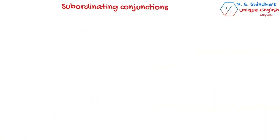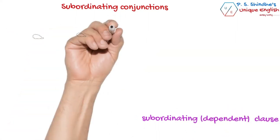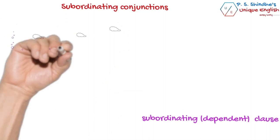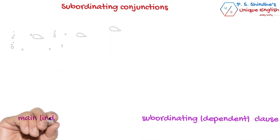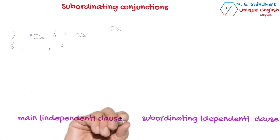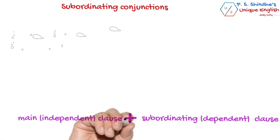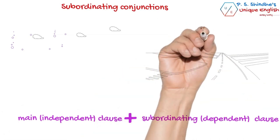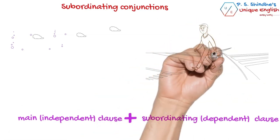Subordinating conjunctions introduce subordinating clauses. A subordinating clause is a dependent clause — the clause that depends on another clause for its complete meaning. Please note: an independent clause is a complete thought containing a subject and a verb, whereas a dependent clause often has a verb and subject but is not a complete thought — it depends on another clause for complete meaning.